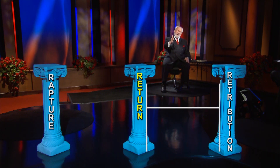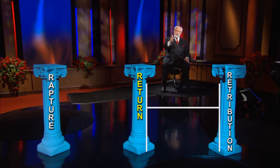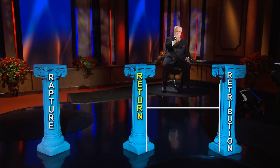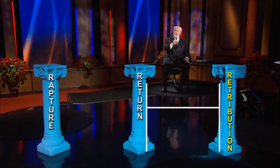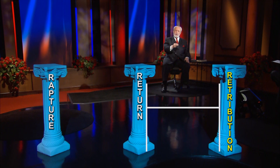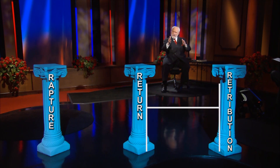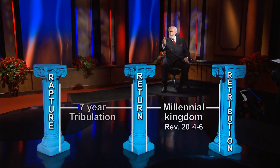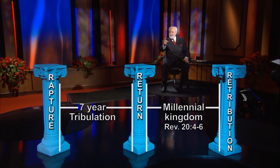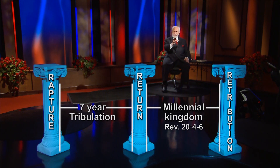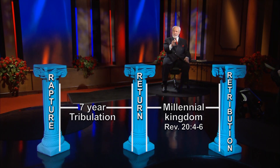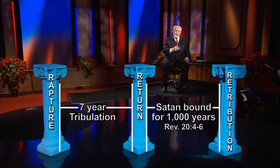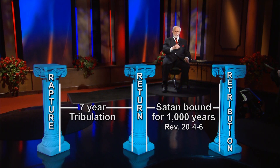And then there's a space between the second pillar, which is the return of Christ, and the third pillar, which would be the retribution — the judgment, the great white throne judgment. That space in between would be a thousand-year period of time. Over here, remember, it's seven years; here it's a thousand years, and that would be the kingdom — the kingdom and a time when Satan will be bound for that thousand years.